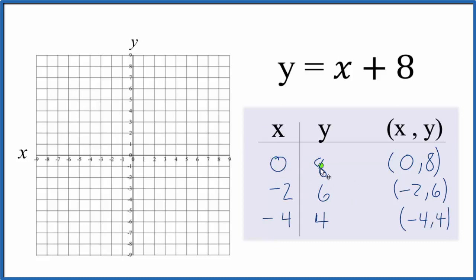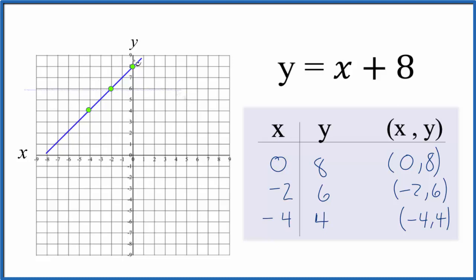I have 0 for x and 8 for y, so x is 0, y is up here at 8 — that's our first point. Then I have negative 2 for x and 6 for y: go to negative 2, up to 6. I'd like to do 3 points just to make sure everything is correct, so let's do negative 4 for x and 4 for y. All of these points make a nice line for y equals x plus 8. Let's put a line through them with arrows on the ends to show it goes to infinity.